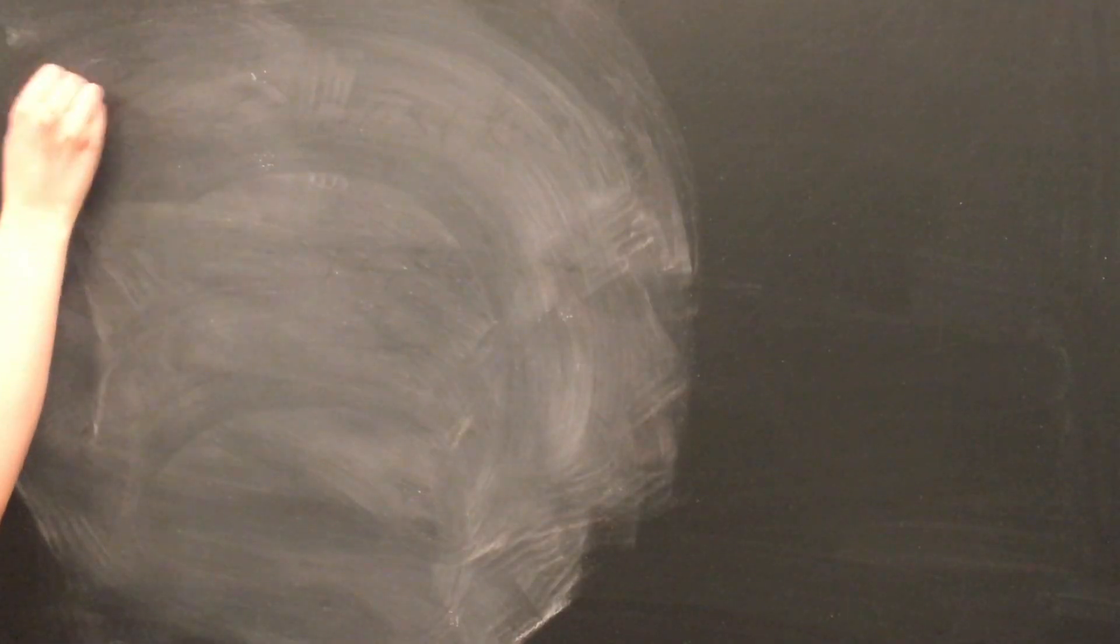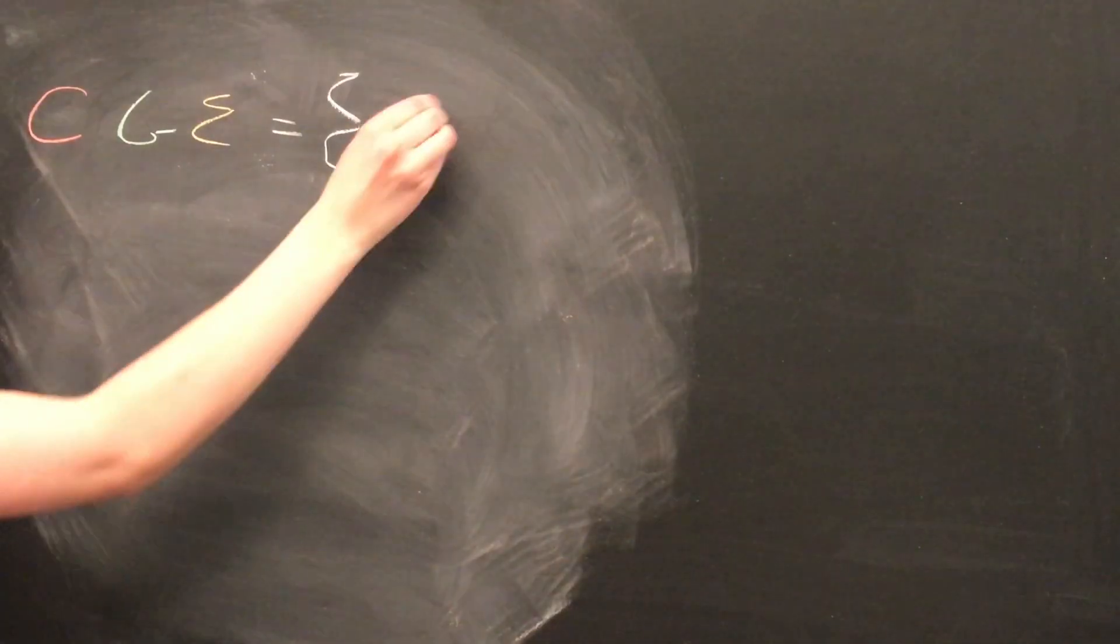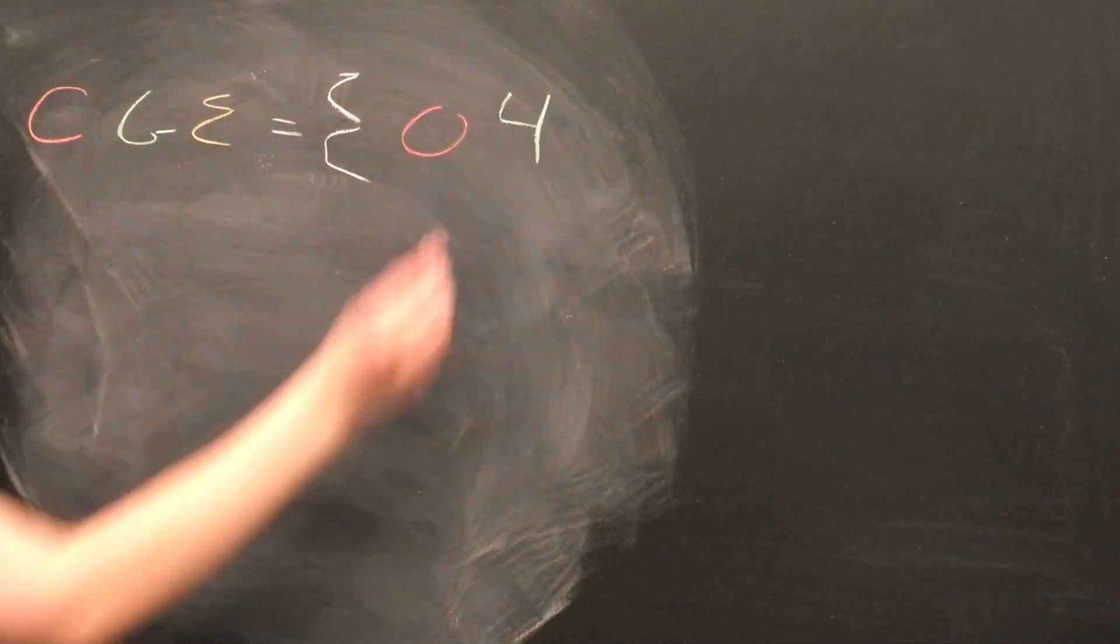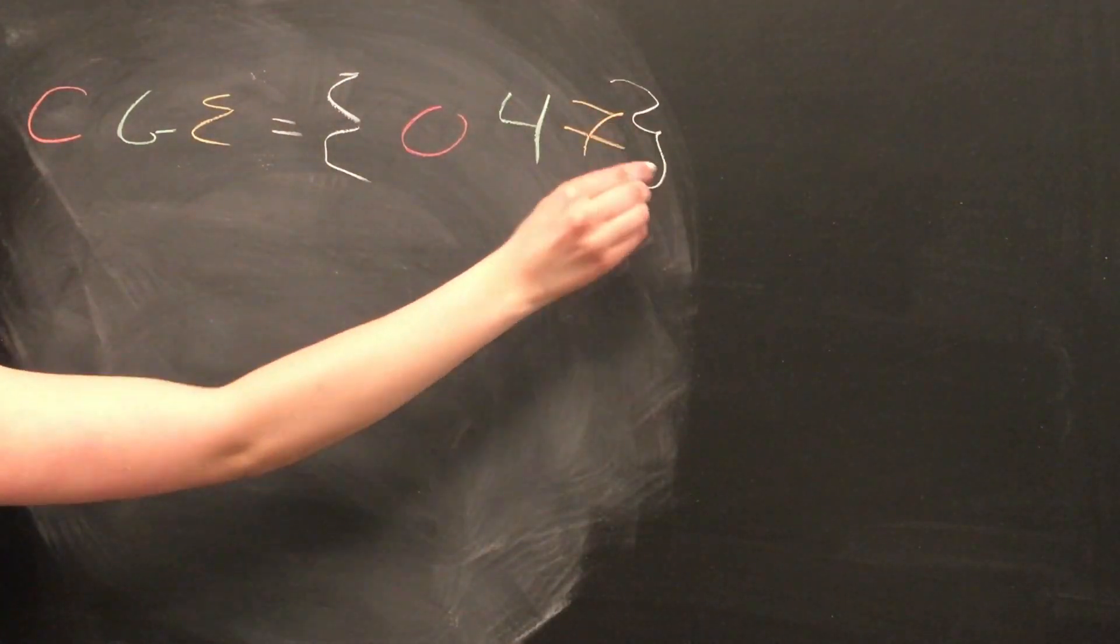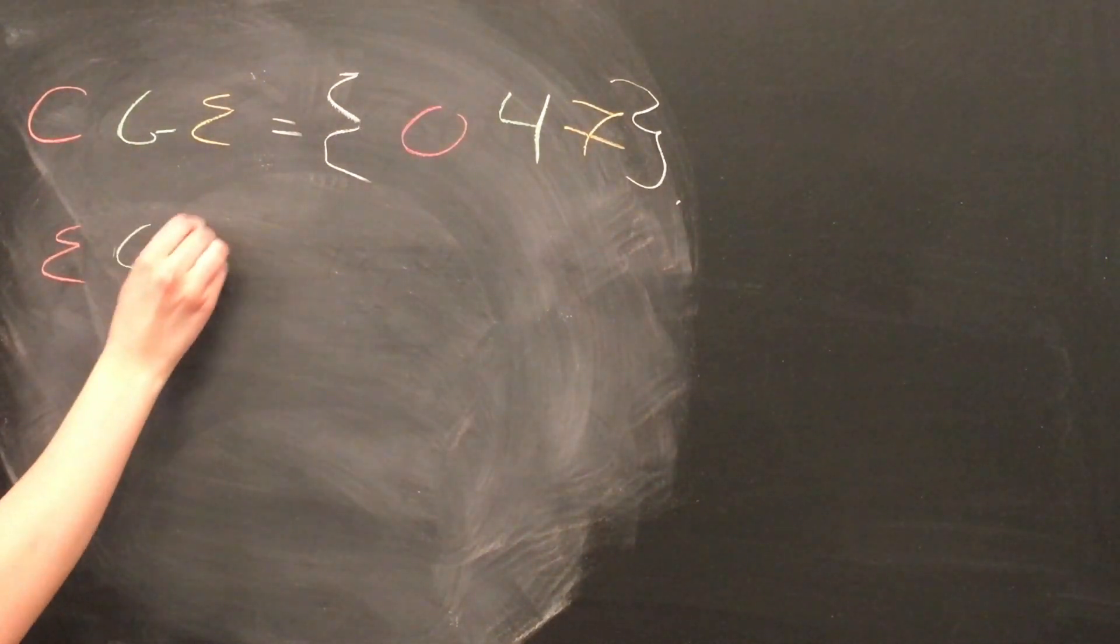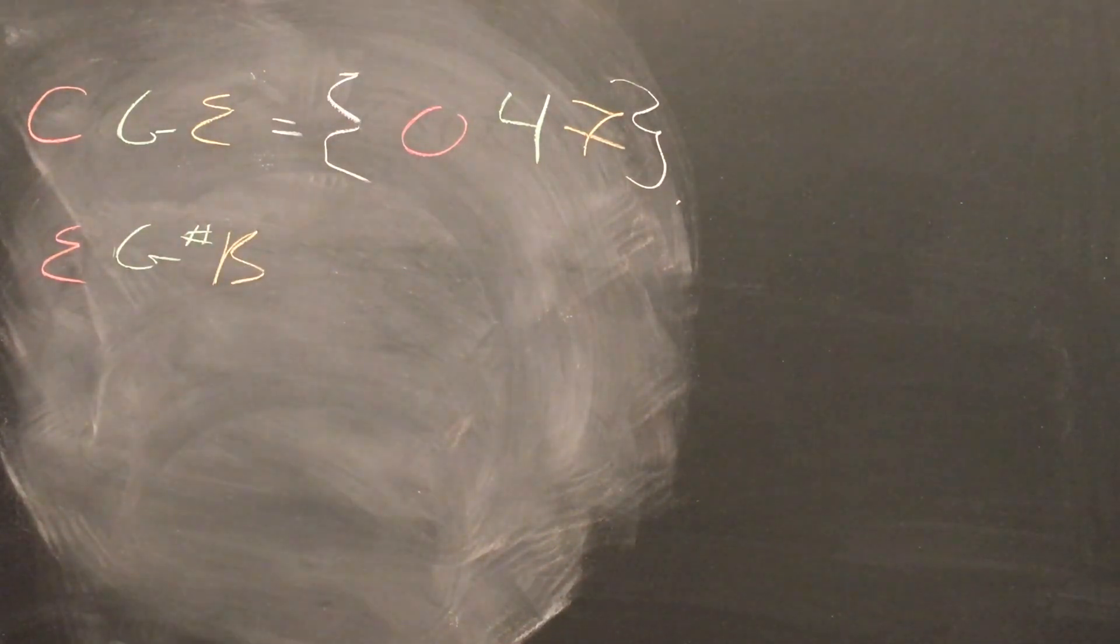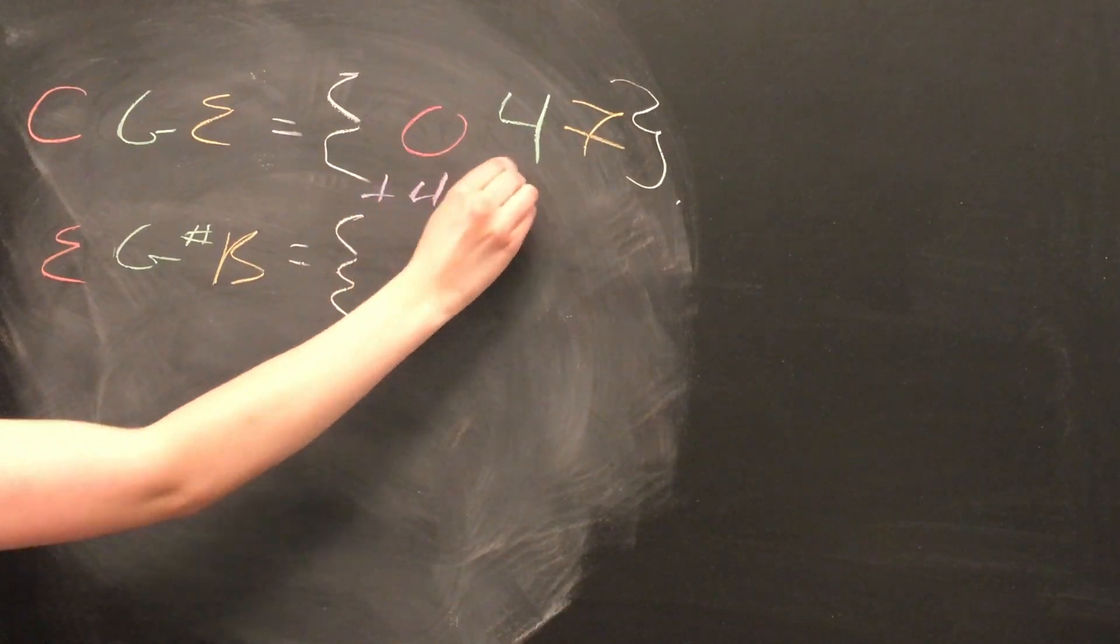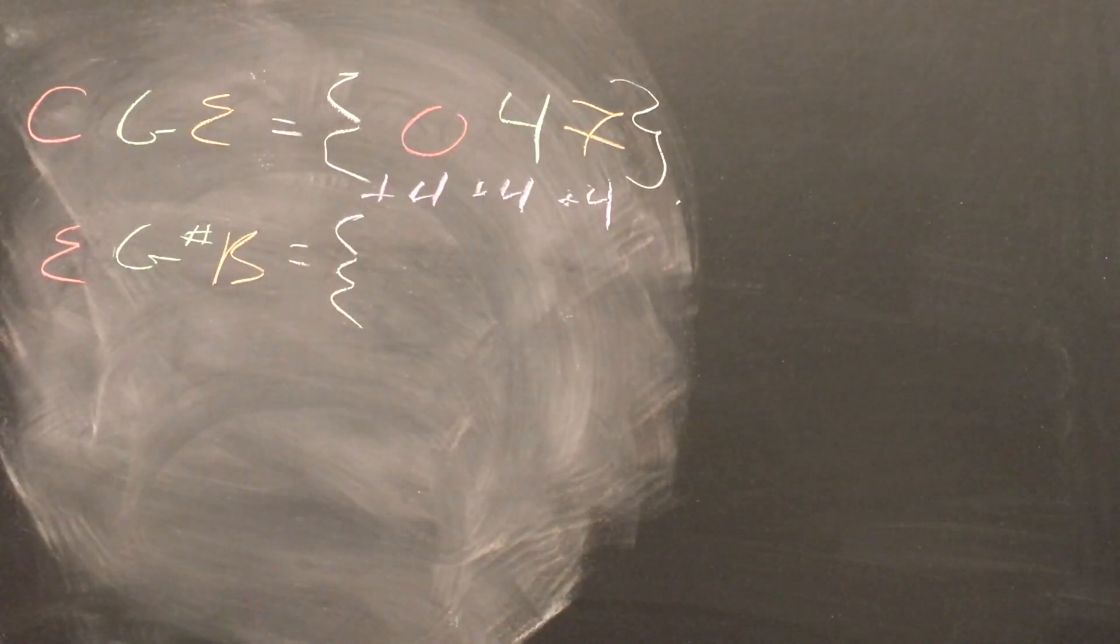For example, consider a C major triad in terms of its constituent pitch class sets. It can be represented as 0, 4, and 7. Now say we want to transpose that C major triad to E major. Well, E is a 4 on the pitch class circle, so we know that the 0 has to become a 4, which we achieve by adding four half steps. So we add 4 to everything in the C major triad to obtain E major triad. So the 0, 4, 7 becomes 4, 8, and 11.